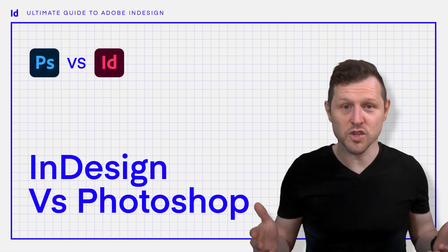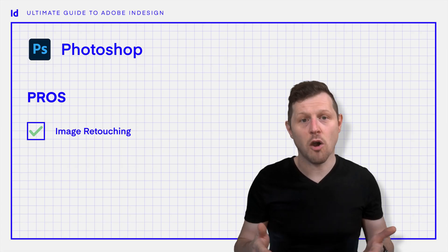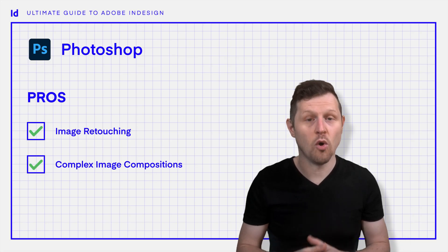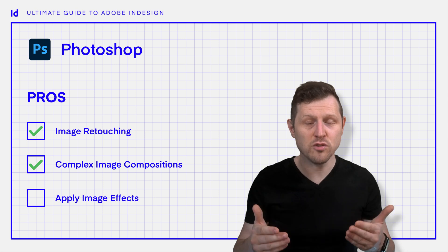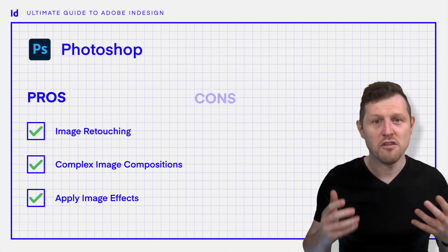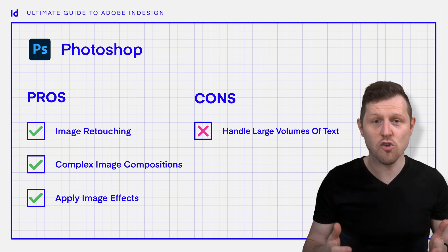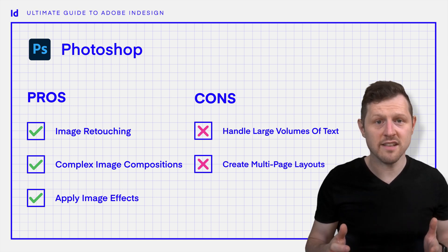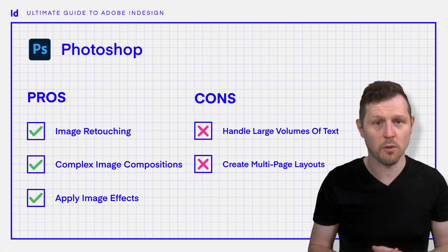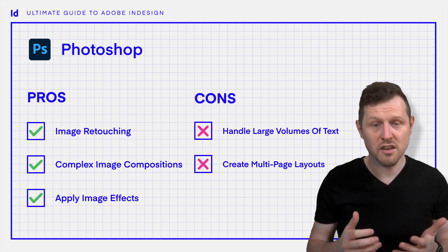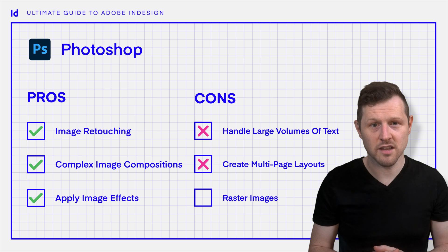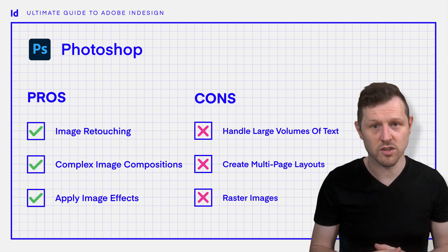Now let's compare InDesign to Photoshop. Photoshop is amazing for editing and manipulating images. If you need to tweak photos, create complex image composites, or apply pixel-based effects, Photoshop is your tool. But here's the catch — Photoshop is not great for handling large amounts of text or creating multi-page layouts. Trying to create a multi-page brochure in Photoshop can get messy really quickly. Plus, Photoshop works in raster format, which can result in lower quality output for print designs if you're not careful with resolution.